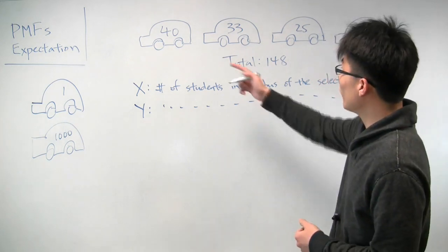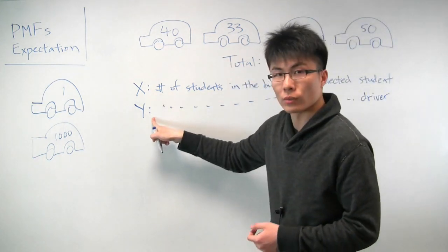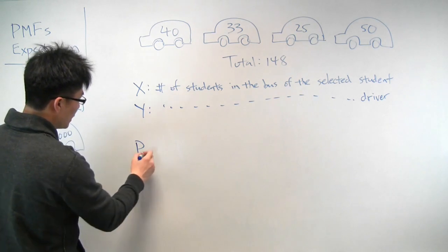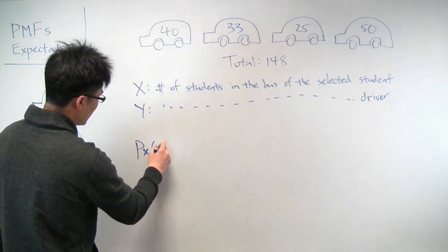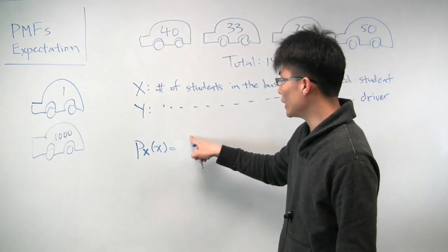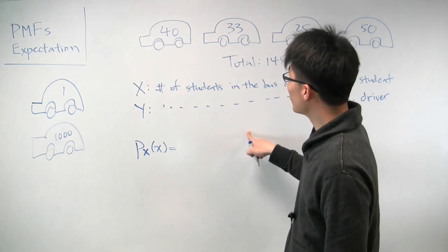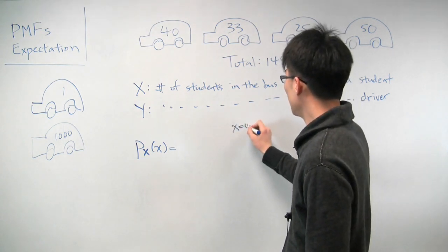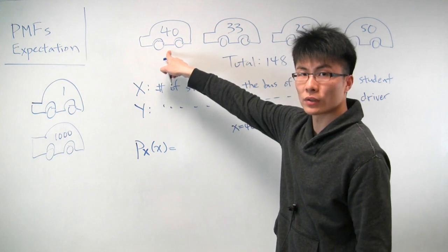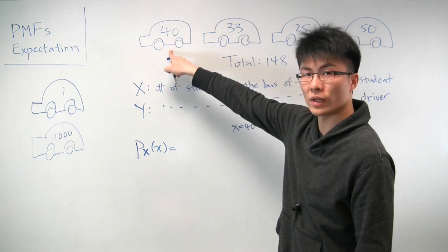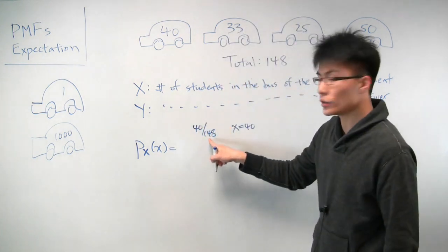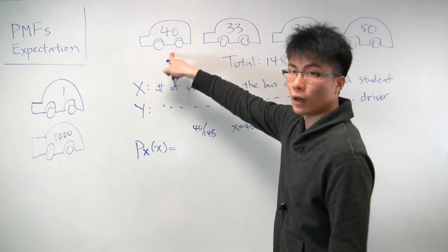We have two random variables that are defined. Now let's just write out what their PMFs are. So the PMF, we write it as little p of capital X, little x. So the random variable, what we do is we say the probability that it will take on a certain value. What is the probability that x will be 40? Well, x will be 40 if a student from this bus was selected. And what's the probability that a student from this bus is selected? That probability is 40 over 148, because there's 148 students, 40 of whom are sitting in this bus.